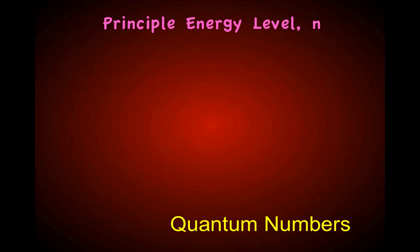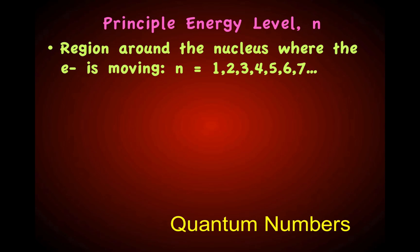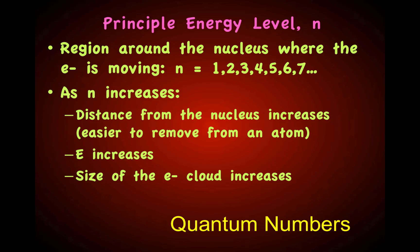The first quantum number is the principal energy level, with the symbol n. A principal energy level is the region around the nucleus where the electron is moving, and can have values of 1, 2, 3, 4, 5, 6, or 7. As n increases, the electron's distance from the nucleus increases, meaning it's easier to remove an electron from the atom.